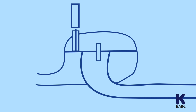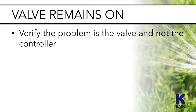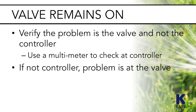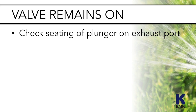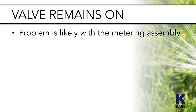Now let's consider the most common problems with valves. Symptom 1: A valve stays on — sprinklers in one area run continuously except when the main water is shut off. First, verify that the problem is at the valve and not the controller. If the controller is continuously sending power to the solenoid, this would prevent the valve from closing; use a multimeter to check at the controller if there is power going to that zone. If the controller is not the problem, take off the solenoid and check if the plunger is hanging or moving freely. Debris can cause the plunger to get stuck — rinse out the solenoid to free it. Also check the seating of the plunger on the exhaust port; if it doesn't seat properly, it won't stop water from flowing into the zone line, keeping the valve open.